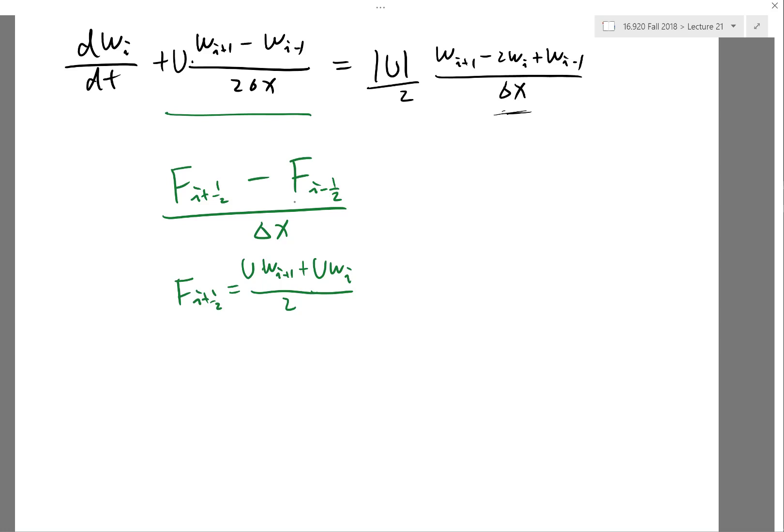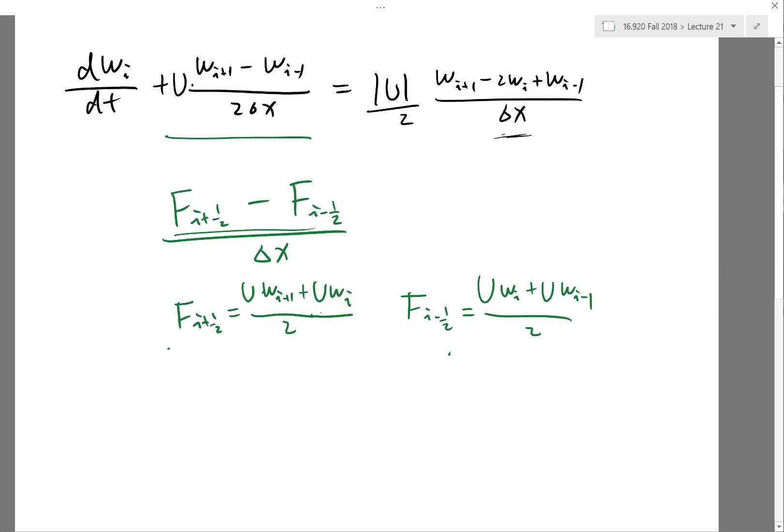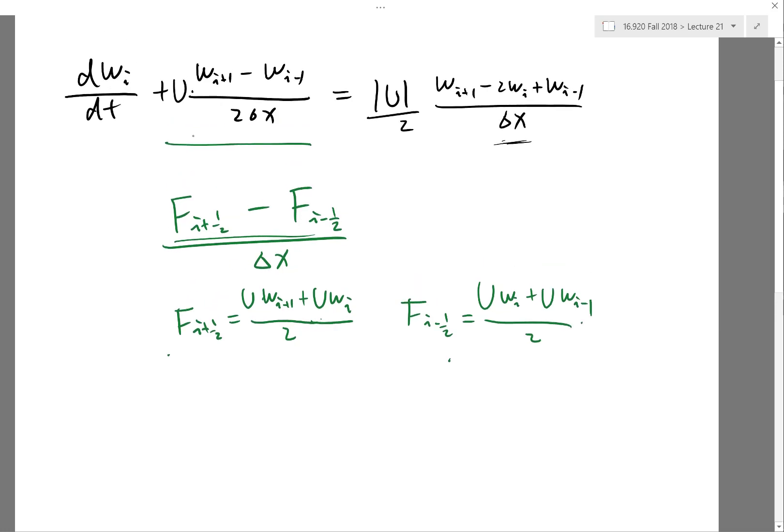Similarly, f of i minus half is just equal to half of u wᵢ plus u wᵢ₋₁. So if you plug both into here, you see the wᵢ term cancels out and you only get wᵢ₊₁ and wᵢ₋₁, which is exactly the central difference.